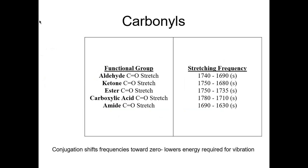A C=O stretch is somewhere between 1600 and 1700 wavenumbers. This is one reason why infrared is not definitive — same with mass spec. You can't determine a complete structure using infrared because you don't know what's connected to what. You just know what functional groups are present, but not how the molecule is put together. The only way to know the connectivity is with NMR.